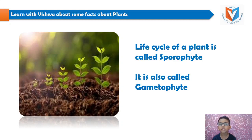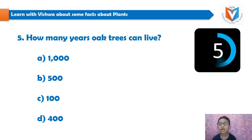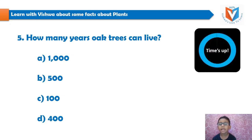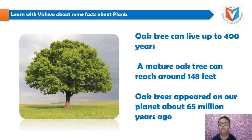And the fifth question is: how many years can an oak tree live? 1,500, 100, or 400. Your 5 seconds time starts now... time's up. And the answer is 400. Oak tree can live up to 400 years. A major oak tree can reach around 148 feet. Oak trees appeared on our planet about 65 million years ago.